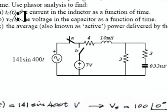Well, we need to find the current in the inductor. The current here is this current and we need to find that as a function of time. But we can find that first as a phasor and then write that current as a function of time.